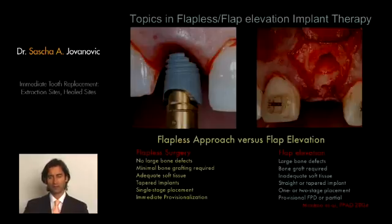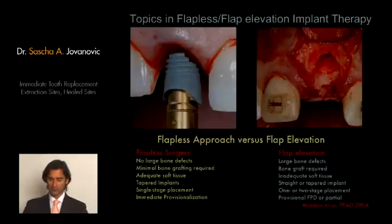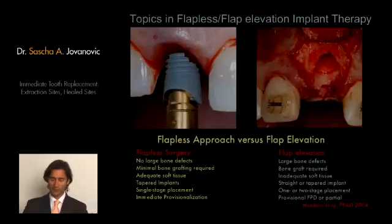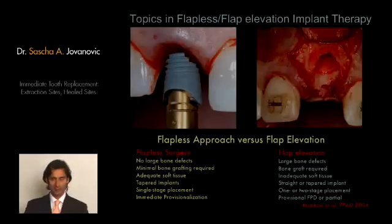When we move to flap elevation, these are cases where we are unsure of the amount of tissue available, or where a bone defect has been diagnosed through radiograph, clinical means, or a combination. This can also occur after a tooth has been extracted. Bone grafts are required, usually meaning a larger flap must be raised to close the site. Inadequate soft tissue means we want to raise a flap so we can potentially add soft tissue. Most cases use a straight or tapered implant; where grafting is necessary, we apply the two-stage procedure — submerge the implant, allow the bone graft and soft tissue to heal, then use a provisional fixed partial denture or partial without loading on the site.